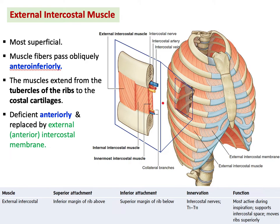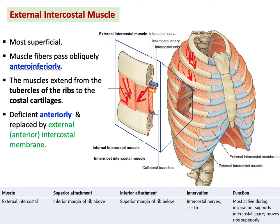Let us start with the external intercostal muscle — the most superficial one. Look at the direction of the fibers: it looks like someone put his hands inside his pocket, meaning the direction is anteriorly and inferiorly. The internal intercostal fibers are perpendicular to this, running posteriorly and inferiorly — opposite to the external.